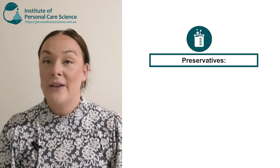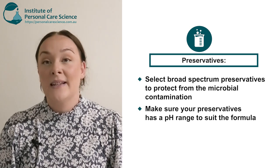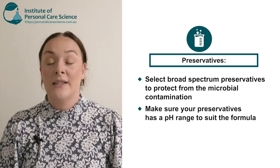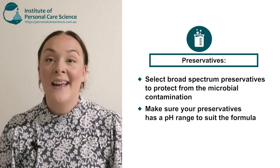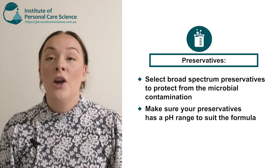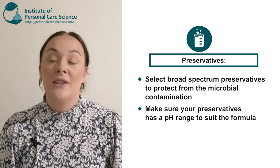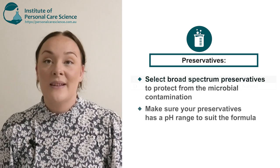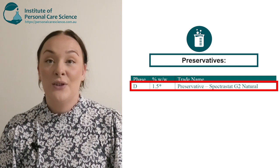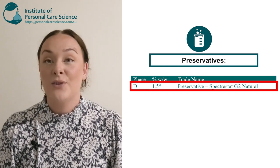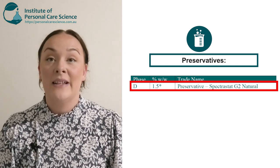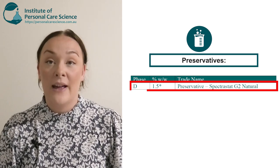Now it's time to select your preservative — please ensure you are selecting a broad spectrum preservative. This is going to protect it from microbial contamination, and make sure it has a pH range to suit the formula. You will also need to check supplier brochures for inputs. In the example I've chosen to use Spectrastat G2 Natural, which has a pH range of 4 to 8 and the supplier's recommended input is 1.5%, so that's what I have used.